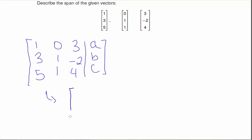So reducing this gives me [1, 0, 3; 0, 1, -11; 0, 0, 0].